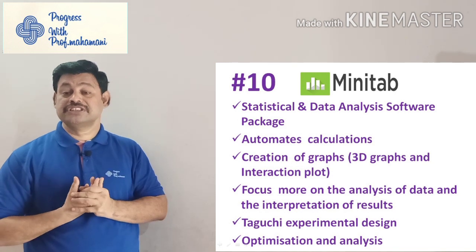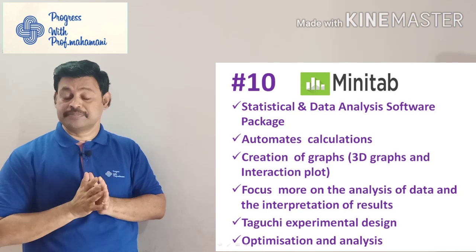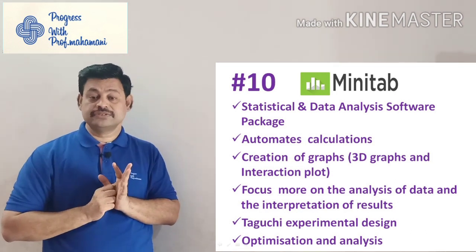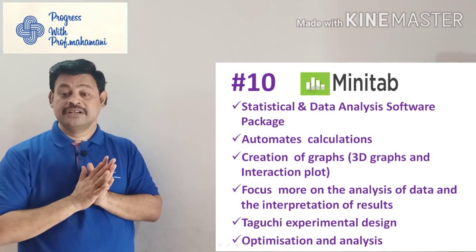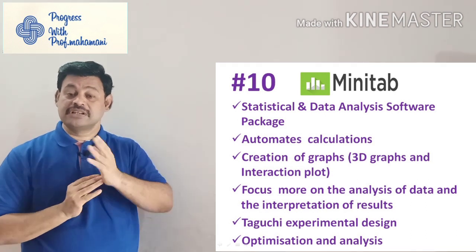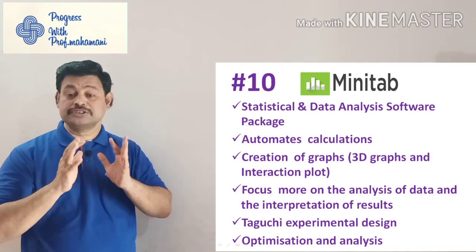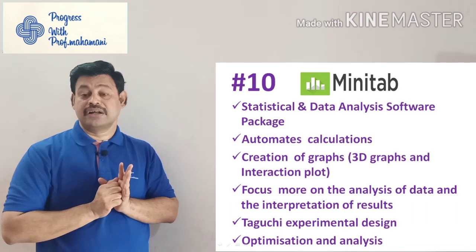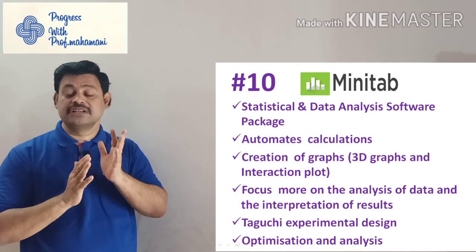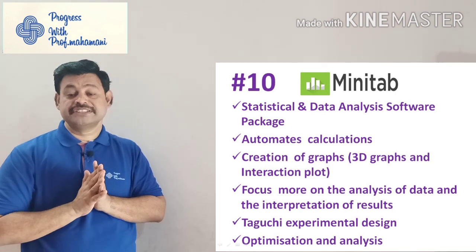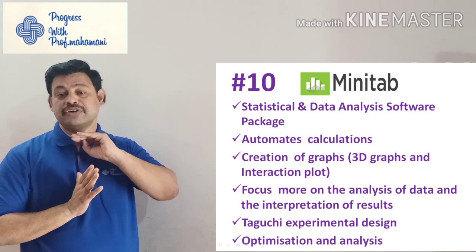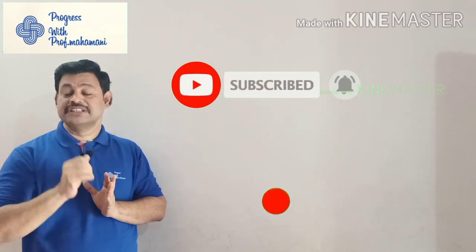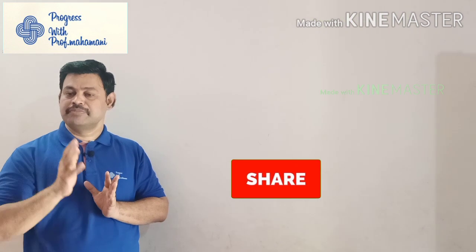The tenth one is Minitab, which is well known especially in mechanical engineering. This tool is used for optimization purposes. It is a statistical and data analysis software package that automates calculations. Using Minitab you can create 3D graphs and interaction plots — for example, Taguchi interaction plots. This software focuses on data analysis and interpretation, and supports Taguchi experimental design and RSM (Response Surface Methodology). With this I conclude my video. Thanks for watching, please subscribe my channel.